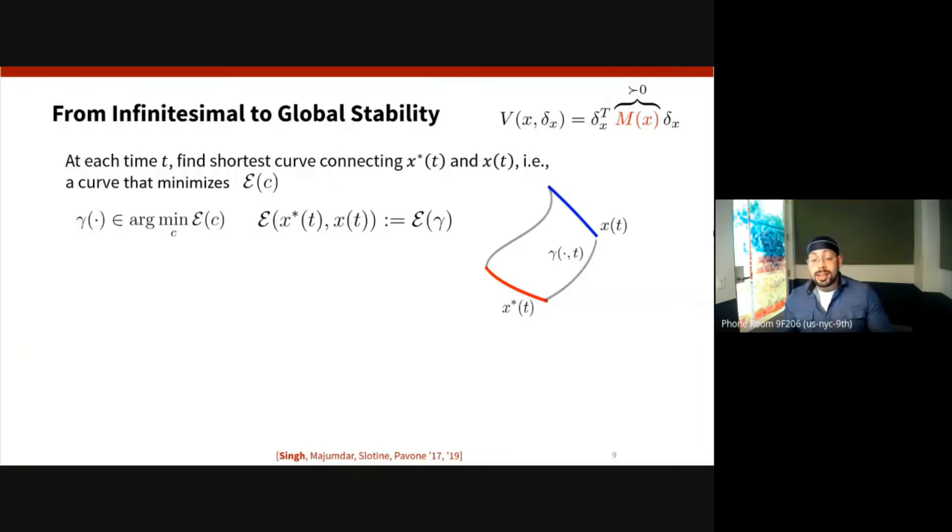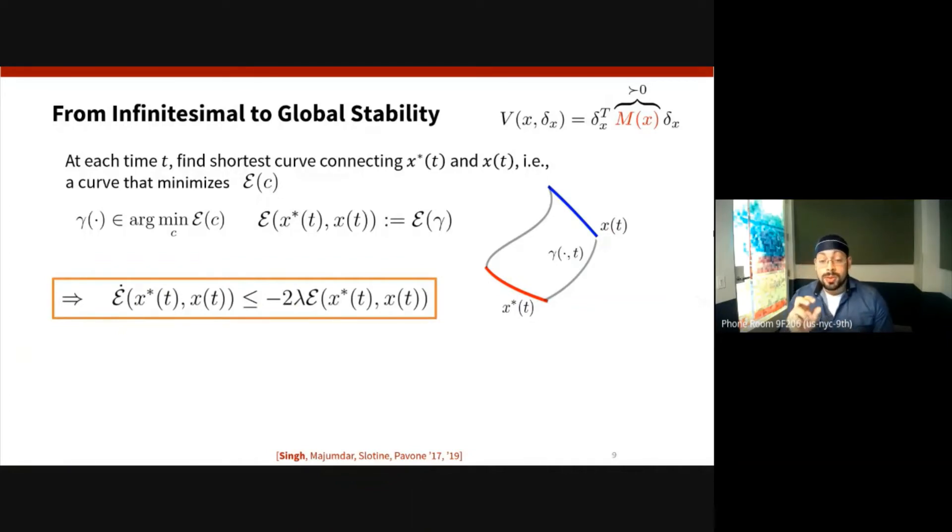And now the idea is that by using a specific integral-based construction for the feedback controller to compute at x(t), we can show that the Riemannian energy itself satisfies this exponential stability property. So we've gone from stability on an infinitesimal scale using the differential Lyapunov function, and then by using integration and a specific form of construction for the feedback controller, we've managed to extrapolate this stability property to the Riemannian energy.